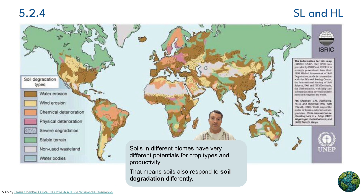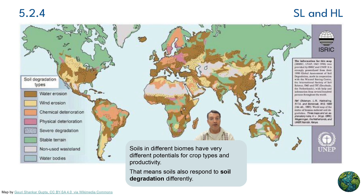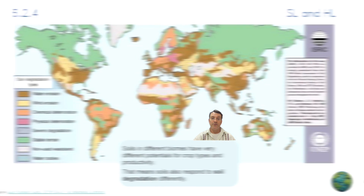This map shows something concerning: different types of soil degradation happening around the world. Soils in different biomes don't just have different productive potential — they also respond to degradation differently. Some soils are more vulnerable to water erosion, and others are more vulnerable to wind erosion or chemical deterioration. This kind of variation means that soil conservation strategies have to be tailored to local conditions.